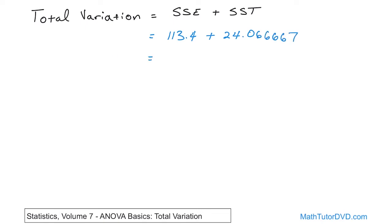And so the total variation, you can abbreviate it total variation or just write it out, total variation. For this problem is 137.466667. And you can write that down and circle that.